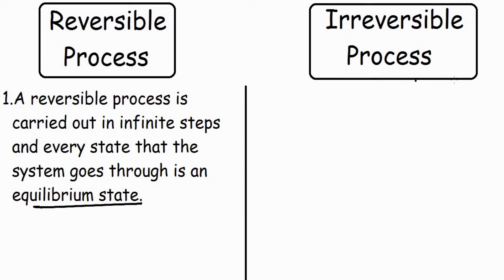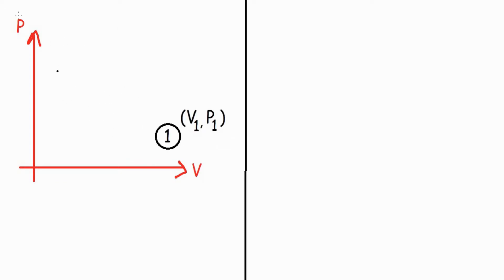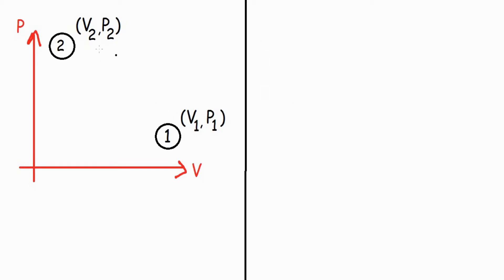Let's try to understand this using the PV diagram. This is the pressure axis and this is the volume axis. Suppose I want to take my system from state 1, given by V1P1, to state 2, which is V2P2. For an irreversible process, I can take the state from 1 to 2 directly by compressing the gas fast in a single step, reaching the V2P2 state at once in a finite time.